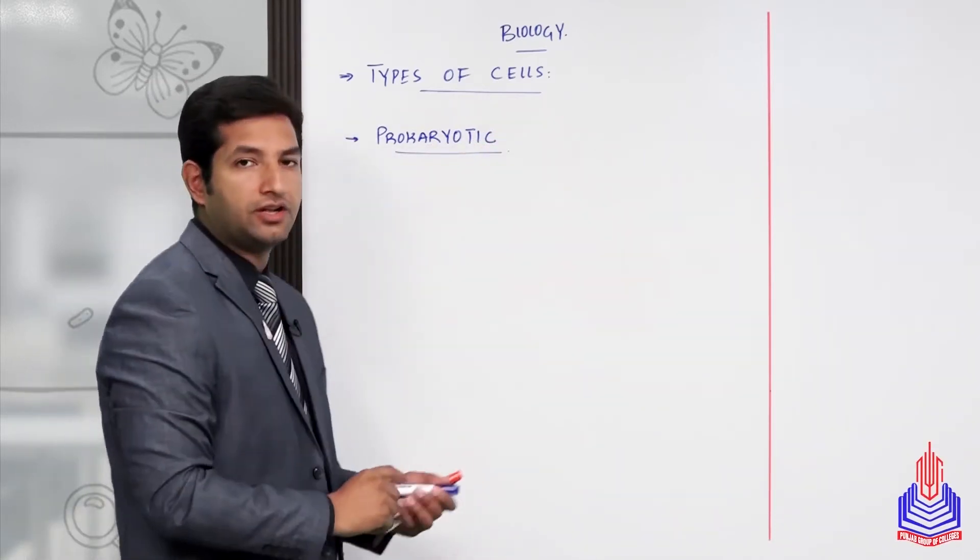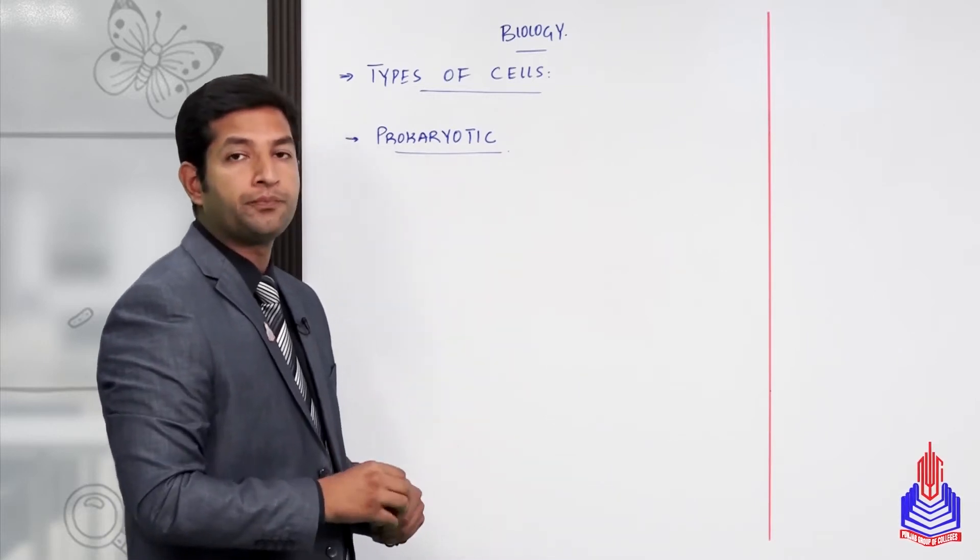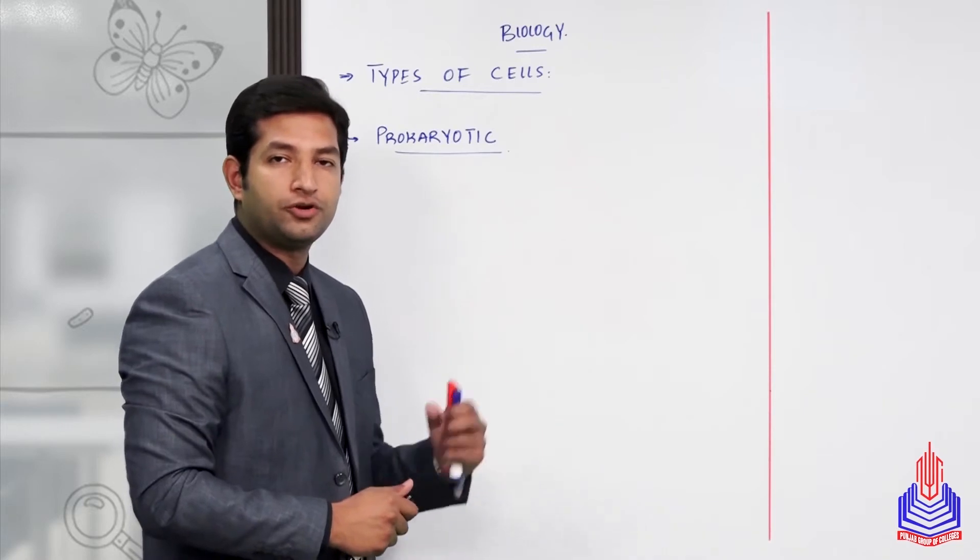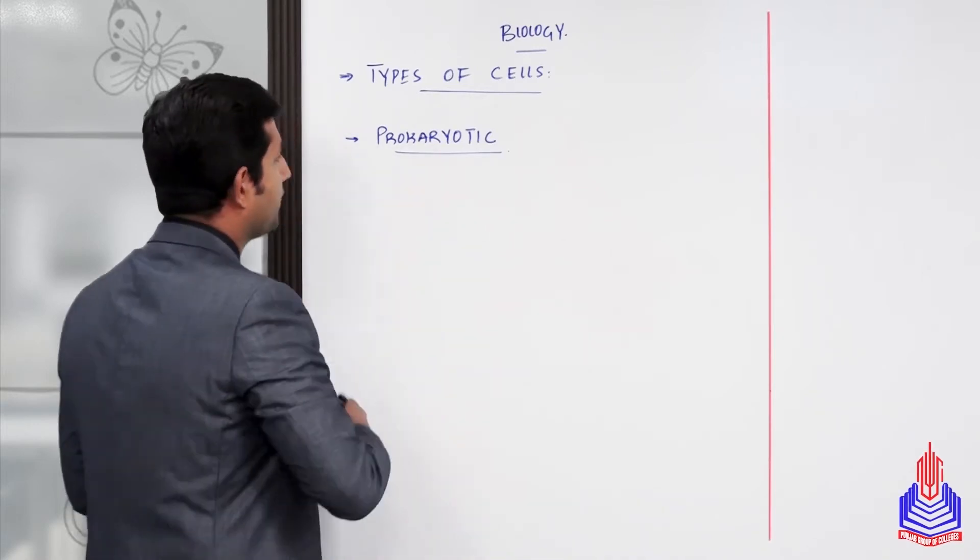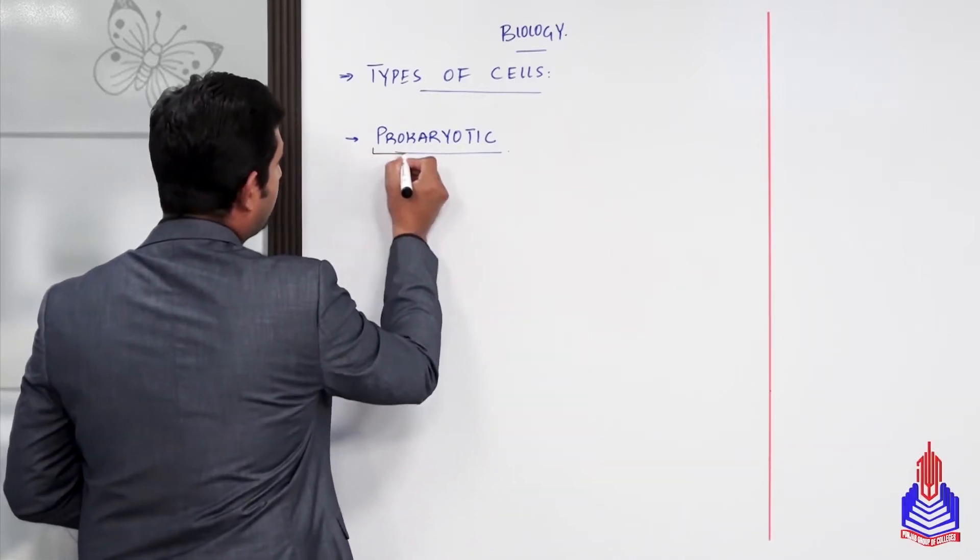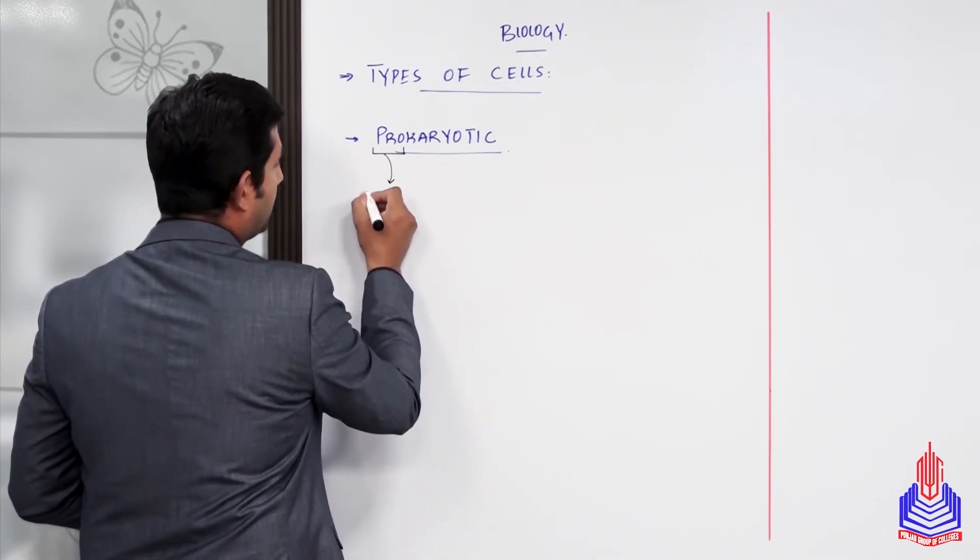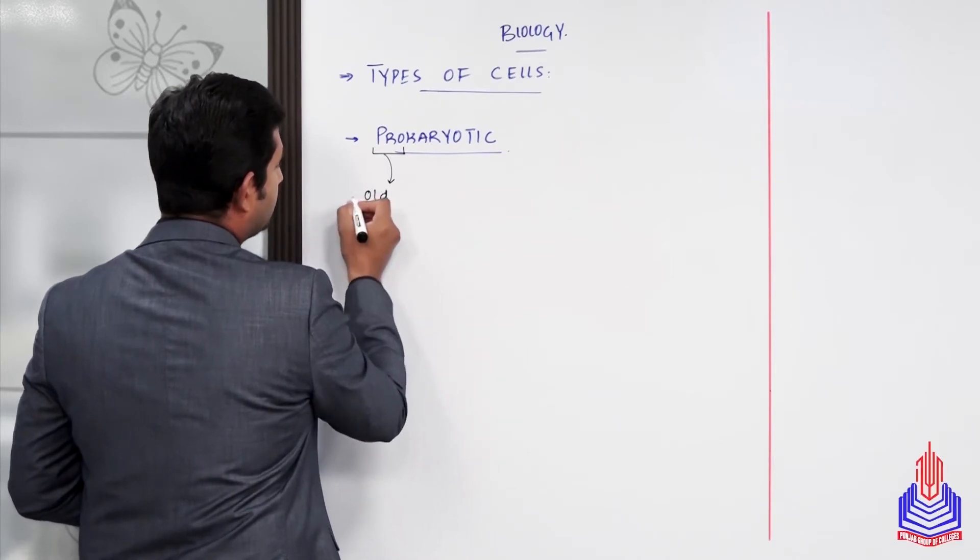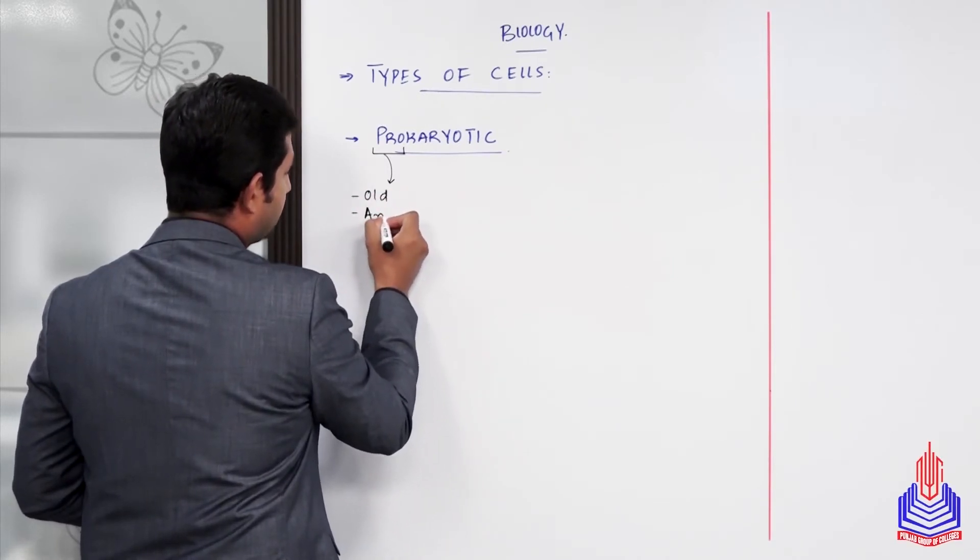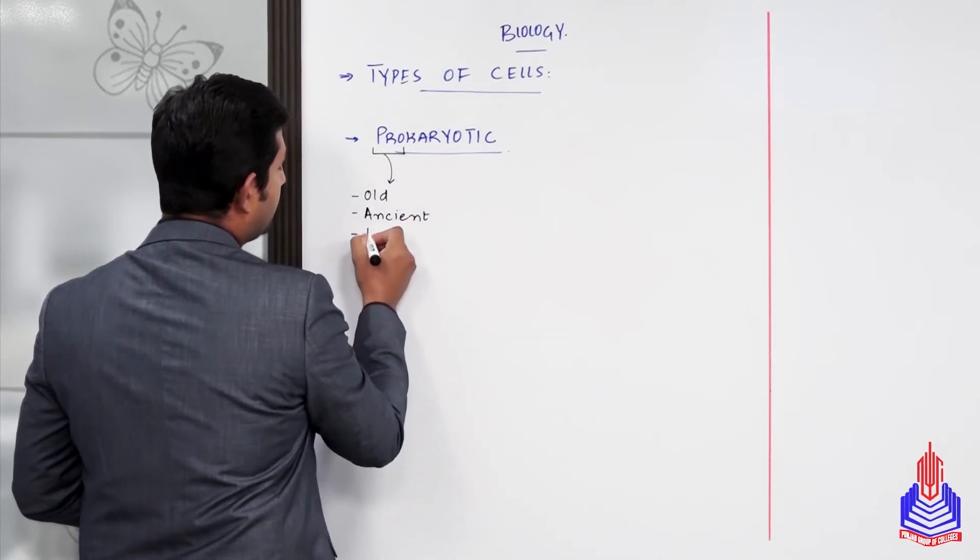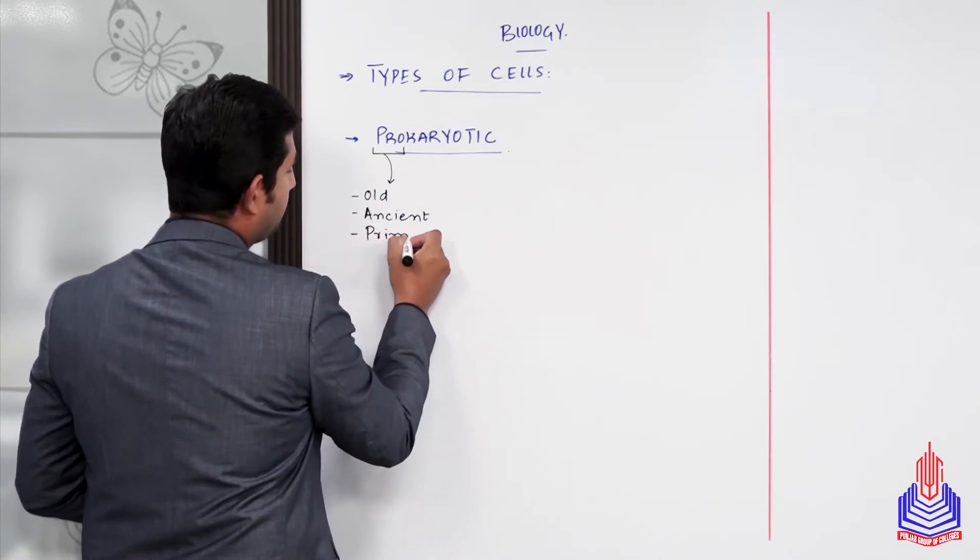First, I'll give you a brief description of prokaryotic cells - what prokaryotic means and its divisions. The word prokaryotic is derived from 'pro'. Pro means old, ancient, or primitive (qadeem in Urdu).